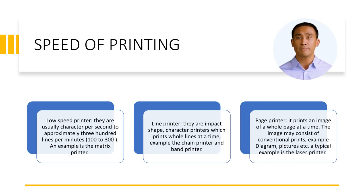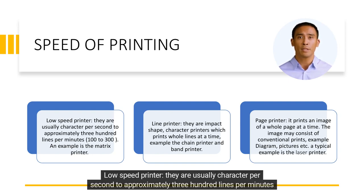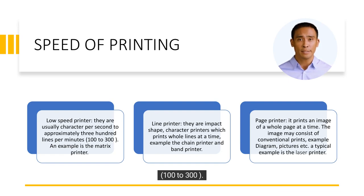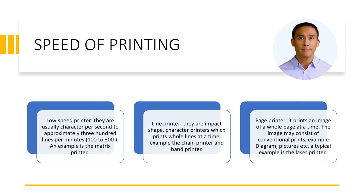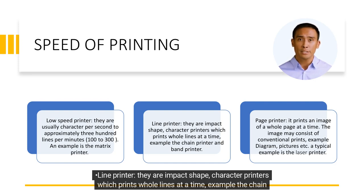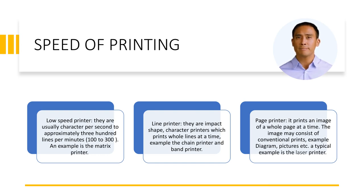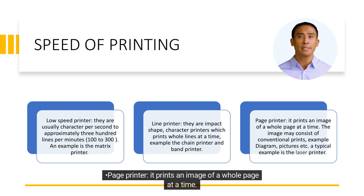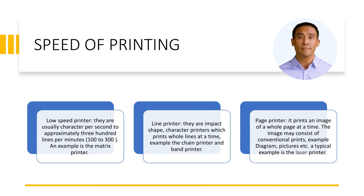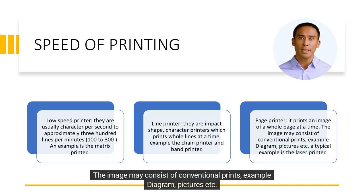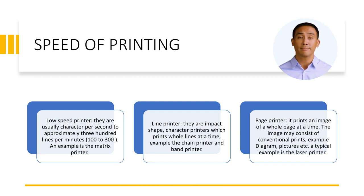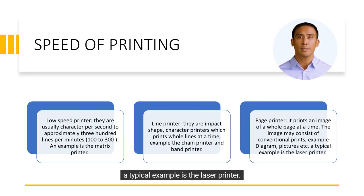Speed of printing: low-speed printers operate at approximately 100 to 300 characters per second or lines per minute; an example is the dot matrix printer. Line printers are impact-type character printers which print whole lines at a time — examples include the chain printer and band printer. Page printers print an image of a whole page at a time; the image may consist of conventional print, diagrams, pictures, etc. A typical example is the laser printer.